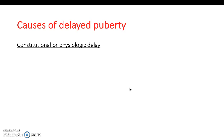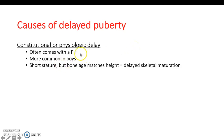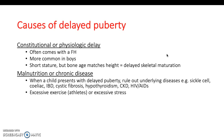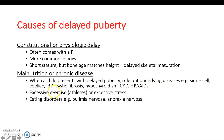Constitutional, also termed physiological delay, often comes with a family history, so taking history and asking the parents is really important. It's more common in boys, and bone age will match height — there is a delayed skeletal maturation compared to the child's chronological age. Malnutrition or chronic disease is also a common cause. Examples of underlying disease you'd want to screen for and rule out include eating disorders and excessive exercise, as athletes often experience delayed puberty due to excessive stress on the body.